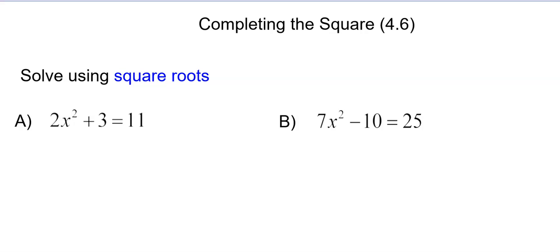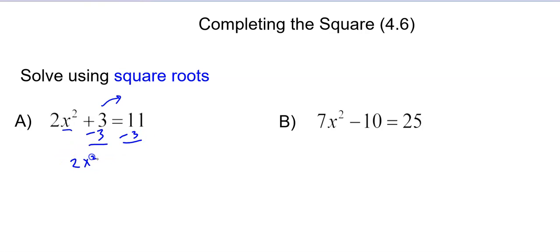Let's start with some easy stuff, just some simple square roots. We want to isolate the x squared, so we want to get all the other terms on the other side. We're going to subtract 3 to get that on the other side. We get 2x squared equals 8, divide by 2, we get x squared equals 4.